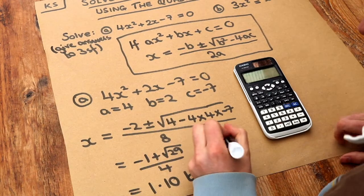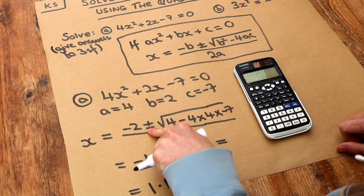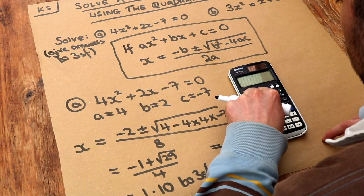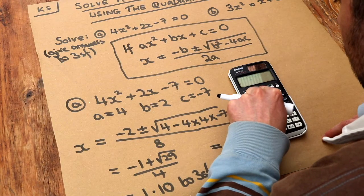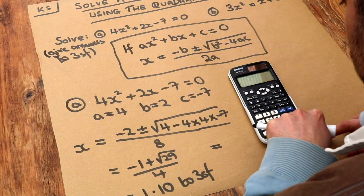But we also get another answer if we use minus here instead because it's minus 2 plus or minus. So to do it with a minus, if we just press the left key in our calculator to modify what we were writing, and I go just after that plus symbol there, press the delete key and do minus instead.